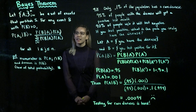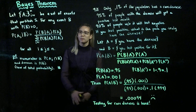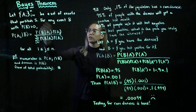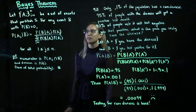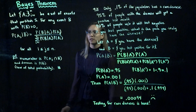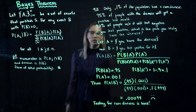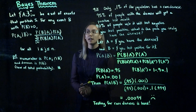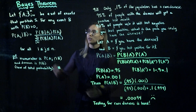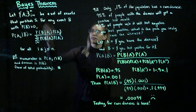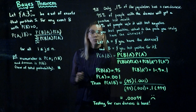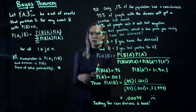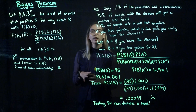Let A1 through An be a set of events that partition S, our sample space. Remember what partition means: the union of all of these events is equal to the sample space, and no two of these events overlap.